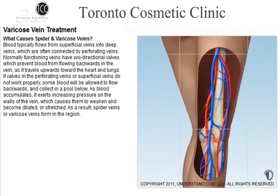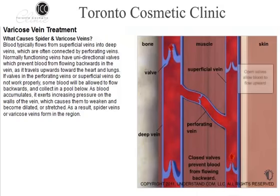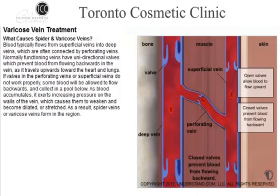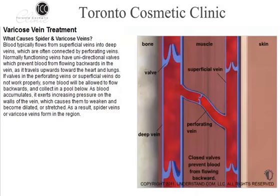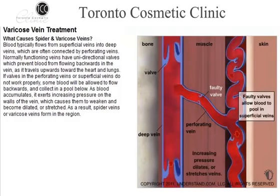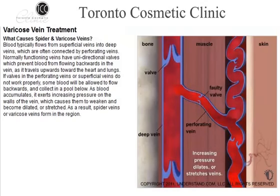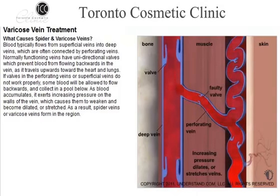Blood typically flows from superficial veins into deep veins, which are often connected by perforating veins. Normally functioning veins have unidirectional valves, which prevent blood from flowing backwards as it travels upwards toward the heart and lungs. If valves in the perforating veins or superficial veins do not work properly, some blood will be allowed to flow backwards and collect in a pool below. As blood accumulates, it exerts increasing pressure on the walls of the vein, which causes them to weaken and become dilated or stretched. As a result, spider veins or varicose veins form in the region.